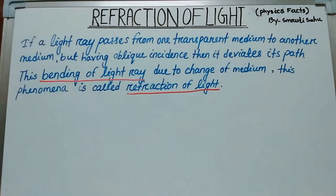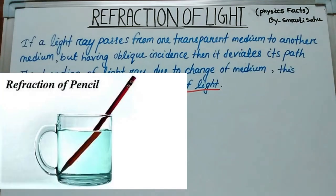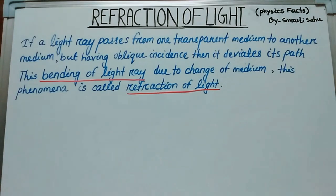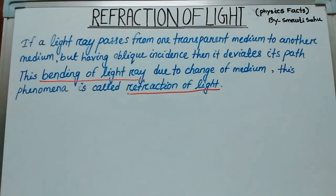Look at those pictures so you can easily relate what I am saying. Look at picture 1 — if we take a pencil or a spoon and place it in water, it looks bent. Now go to picture 2. When light passes from air to a water medium, it deviates from its path. This is called the bending of light, and this phenomenon is called refraction of light.